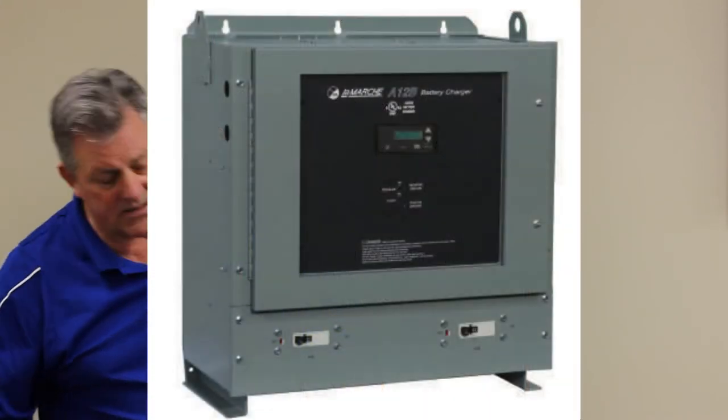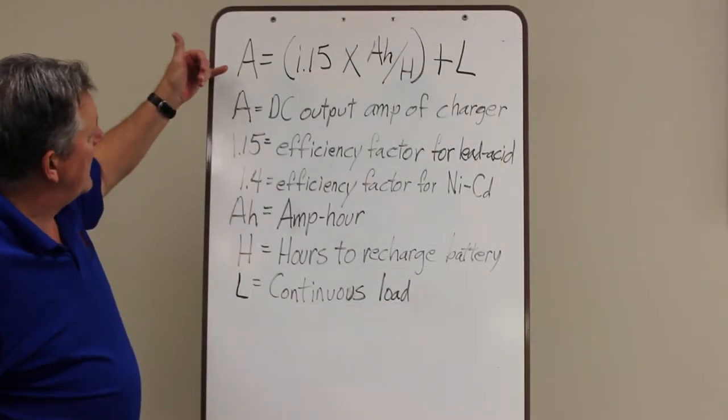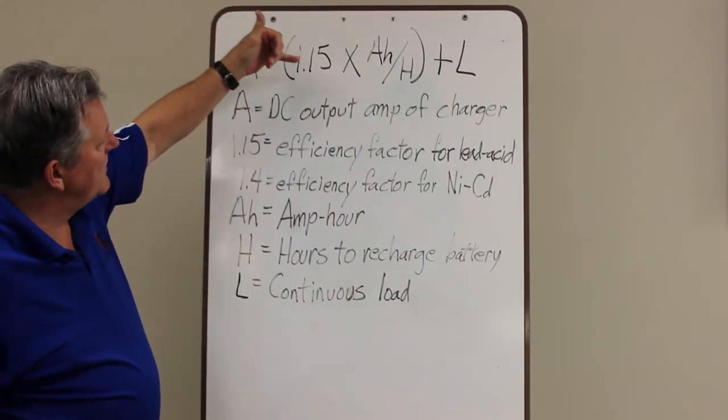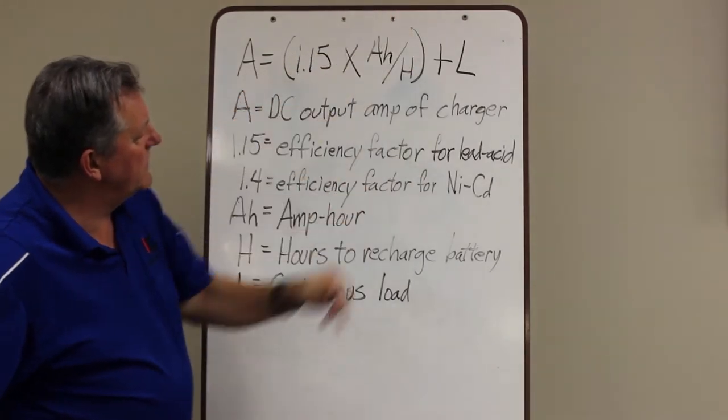So today we're going to look at sizing a battery charger. Pretty simple equation where A equals 1.15 times the amp hours divided by the hours plus the continuous load.